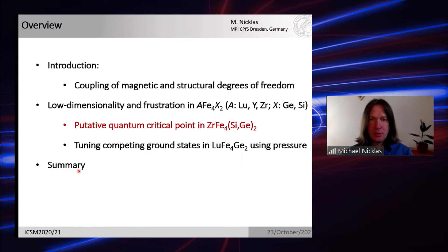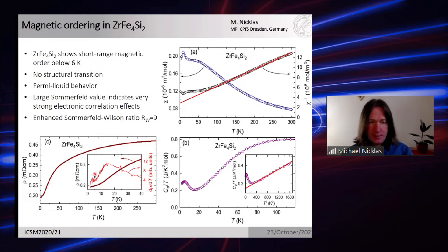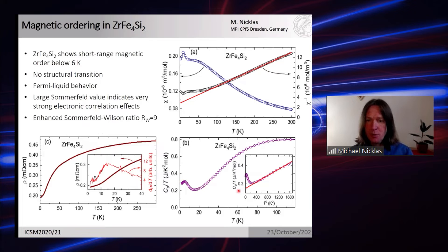In the stoichiometric ZrFe4Si2 compound, there are indications for short-range magnetic order. The susceptibility shows a quite broad feature, the specific heat has only a very broad anomaly with no sharp phase transition, and the resistivity shows a minimum at the transition. At low temperature, this material shows Fermi liquid behavior. Surprisingly for a transition metal compound, we have a rather large Sommerfeld coefficient of more than 100 mJ/mol·K², pointing at strong correlation effects caused by spin fluctuations from the geometric frustration.